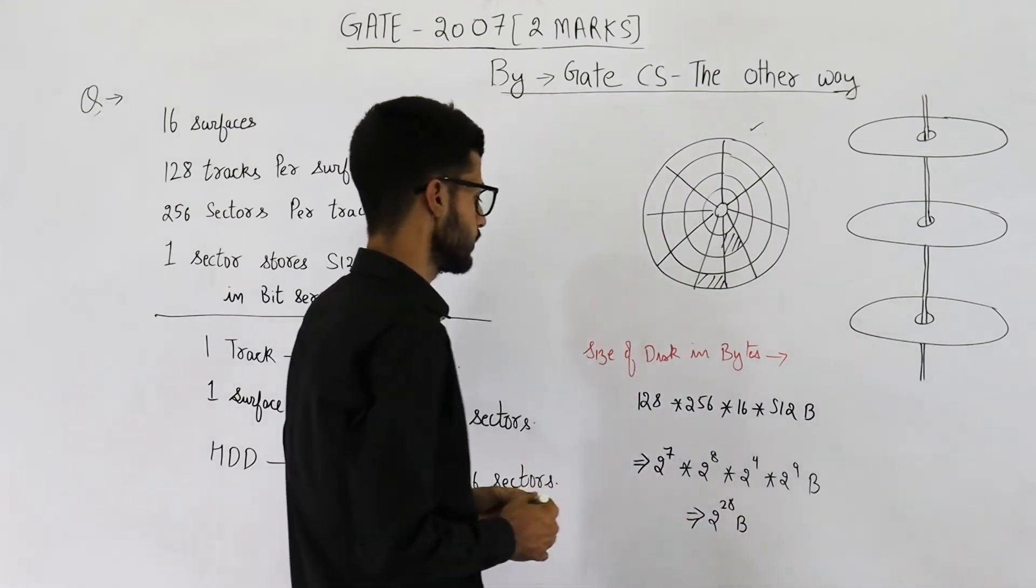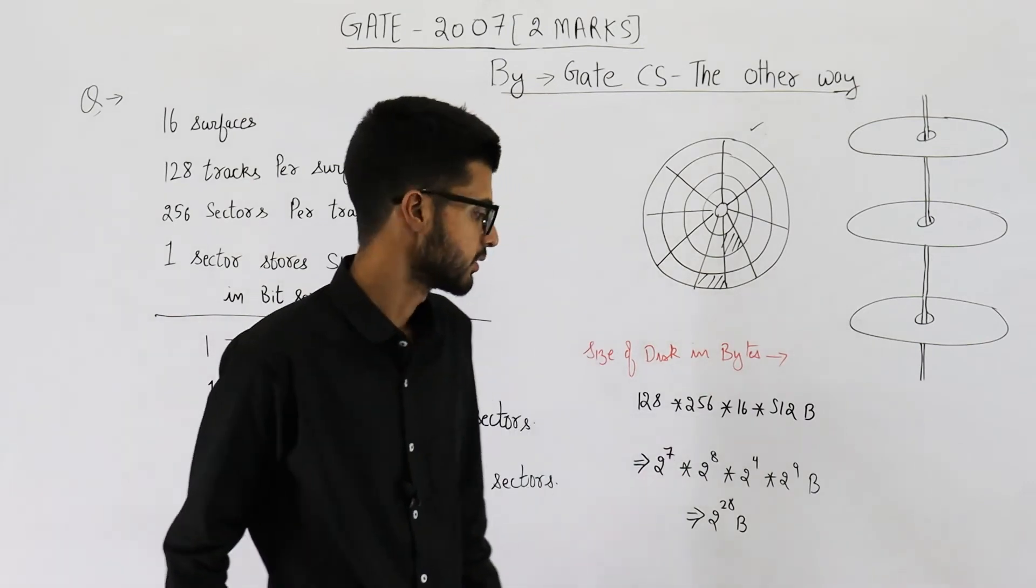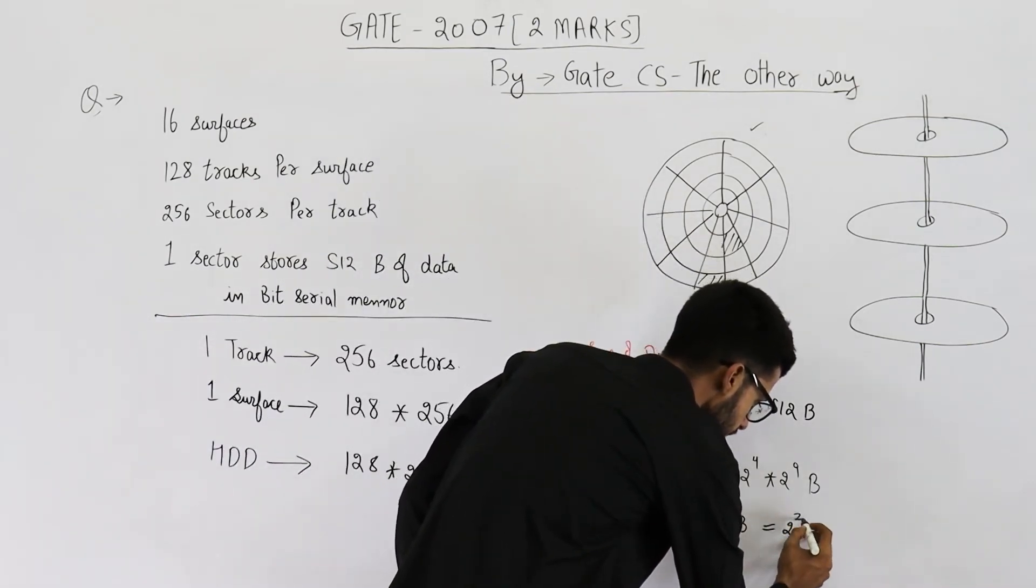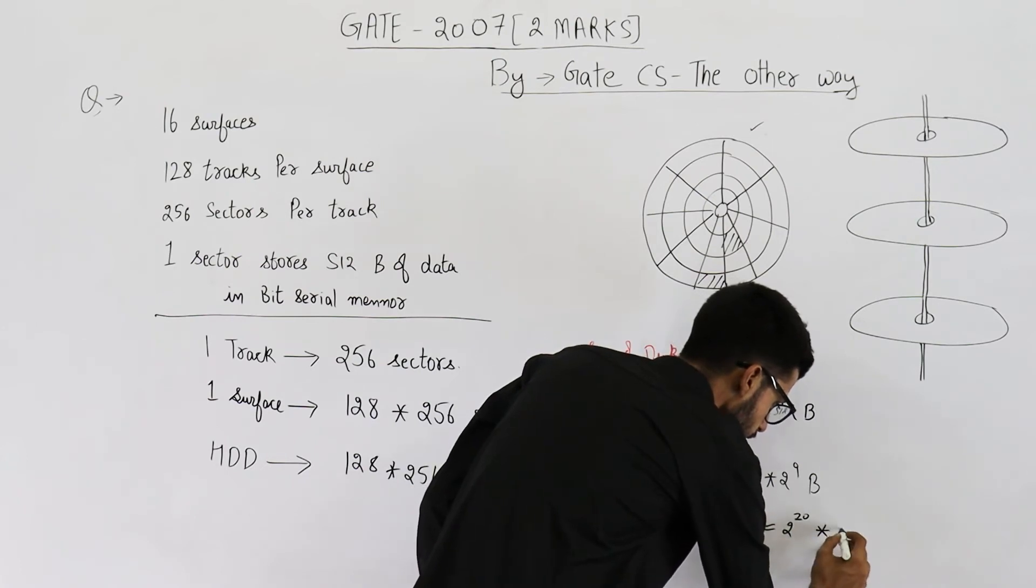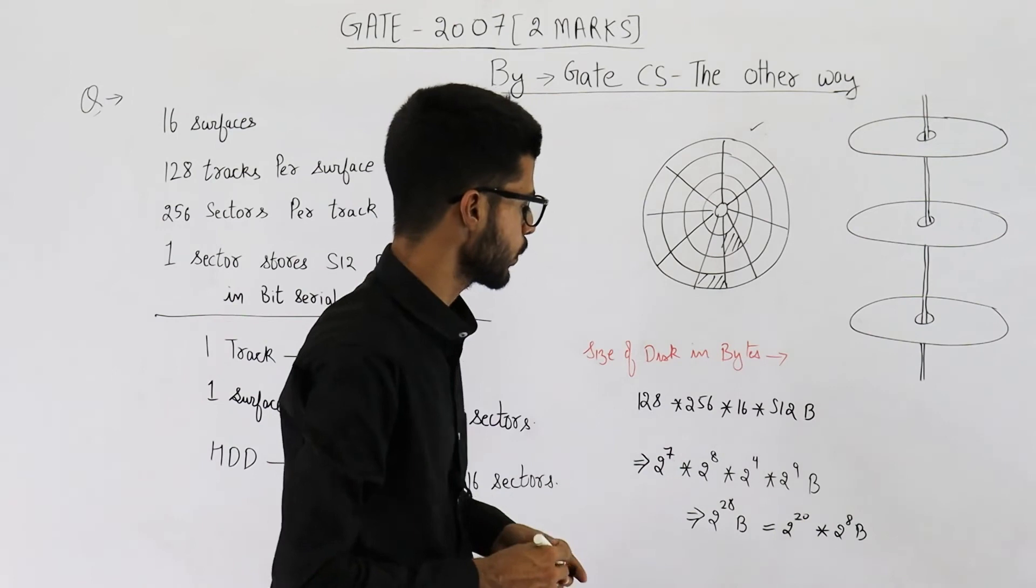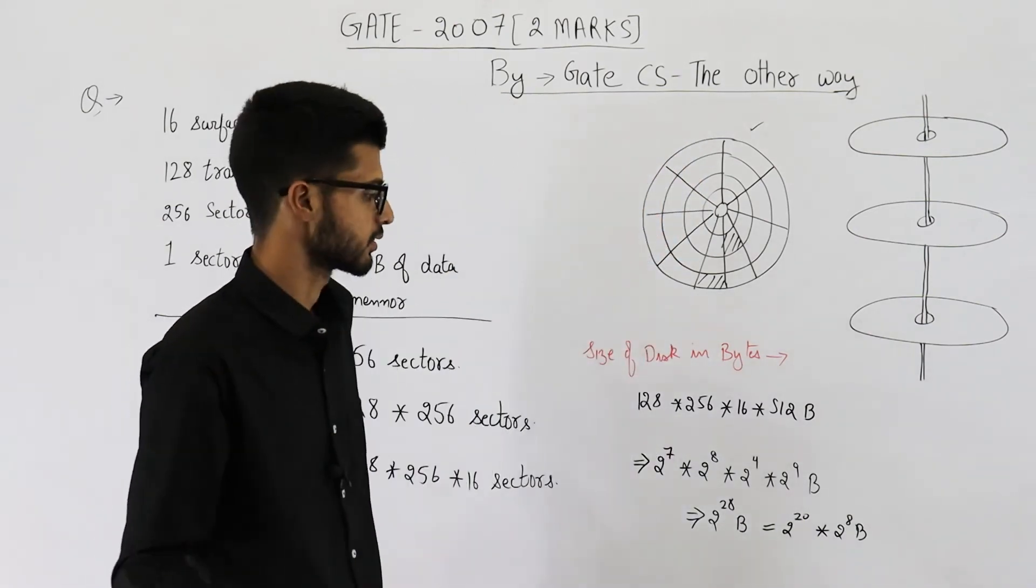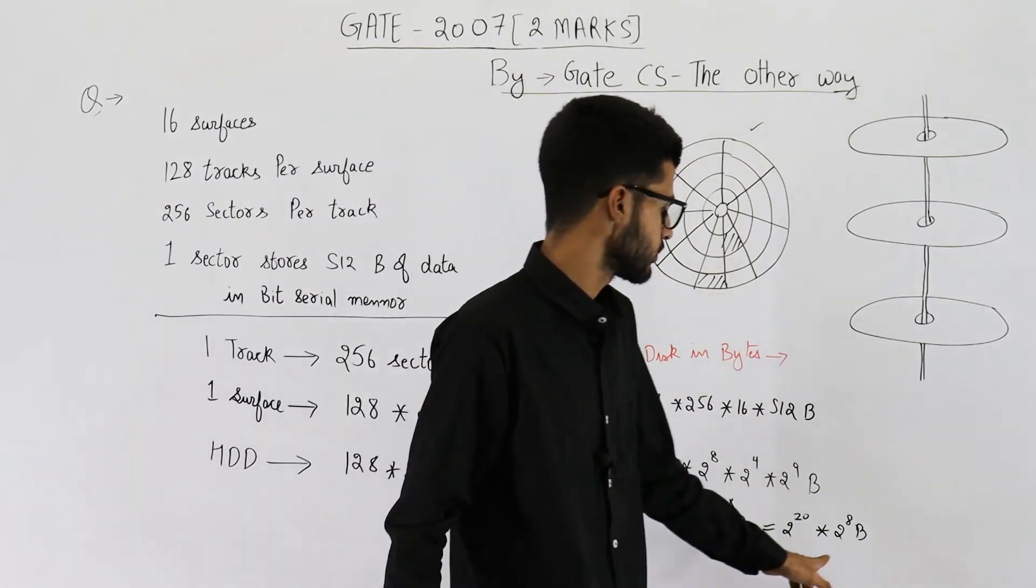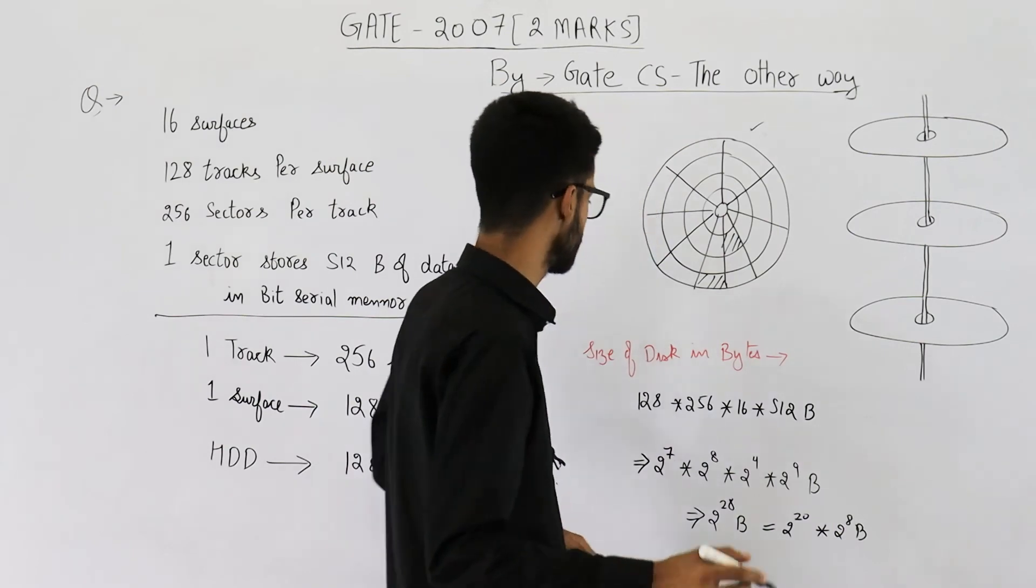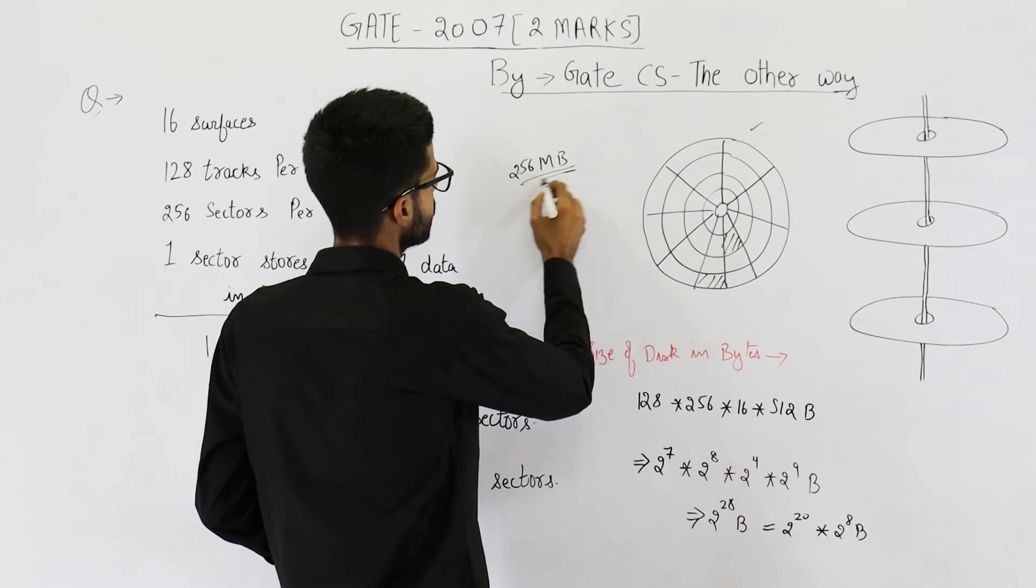So you can see the size of disk comes out to be 2 raised to the power 28 bytes. This can be written as 2 raised to the power 20 bytes into 2 raised to the power 8 bytes. 2 raised to the power 20 is 1 megabyte. 2 raised to the power 8 is 256. So total becomes 256 megabytes. So your answer is 256 MB.